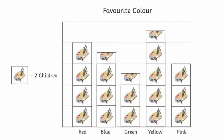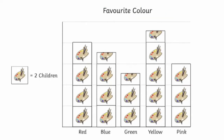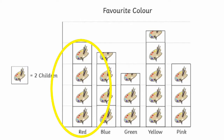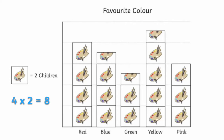For instance, in this pictogram representing children's favorite colors, we can see that each picture represents two children. There are four pictures in the red column. Because each one represents two, we would multiply four by two to get eight. That means that there are eight children whose favorite color was red.